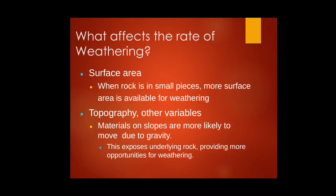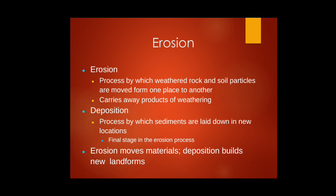Surface area also affects weathering rate — when a rock is broken into smaller pieces, more surface area is exposed to sun, water, and wind, resulting in faster weathering. Topography and other variables: materials on sloped ground roll and move due to gravity, rain, air, earthquakes, and landslides, causing the exposed underlying rock to weather faster than stable rocks. Erosion is the process by which weathered rock and soil particles are moved from one place to another.